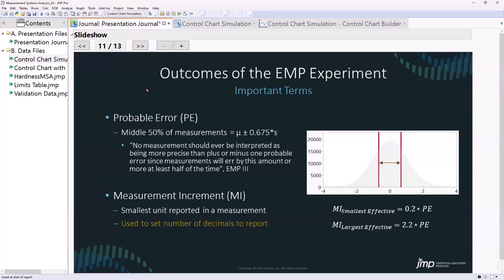Probable error is another thing that the EMP method uses that I really like. In the beginning, I was talking about my tape measure and how I estimate what I can report in terms of my measurements. Well, wouldn't it be better if we actually use data to answer the question about how many decimal places we report, what precision we report?